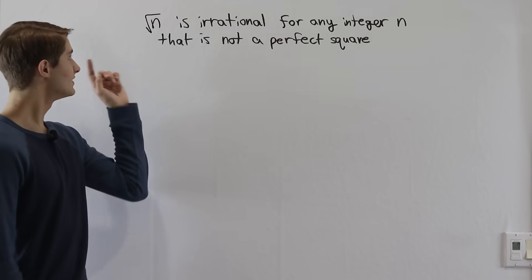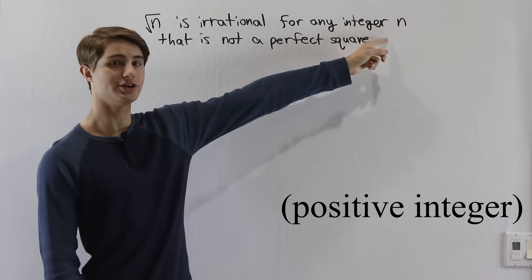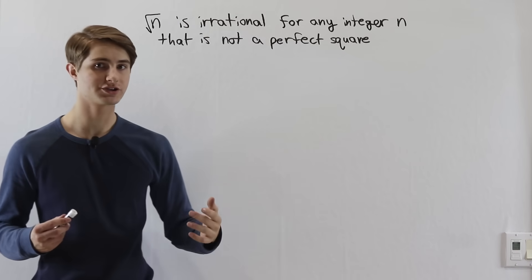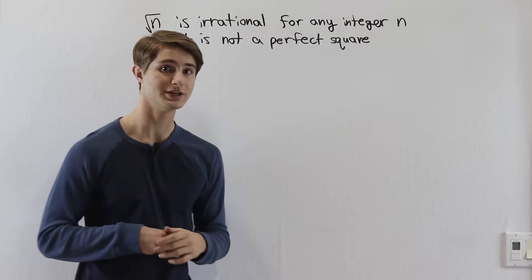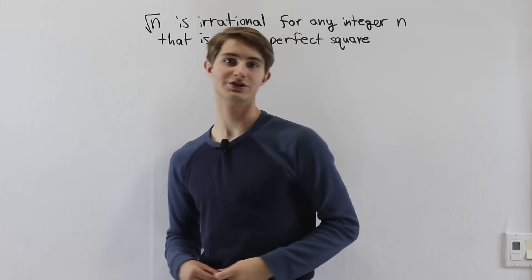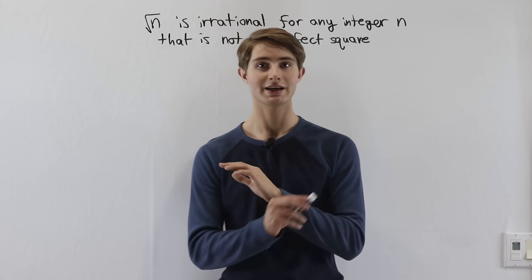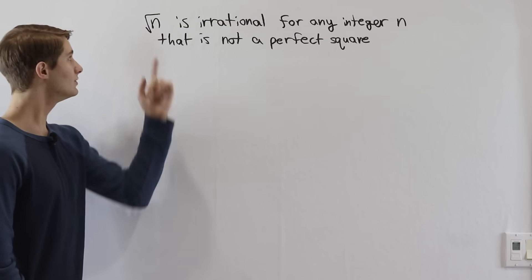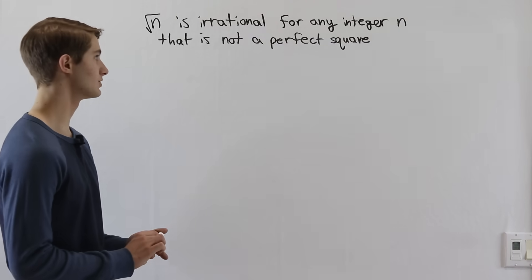We are going to prove that the square root of n is irrational for any integer n that is not a perfect square. We aren't just going to show that the square root of 2 is irrational or the square root of 3 is irrational. We're going to show that the square root of 12 is irrational and the square root of 44 is irrational — anything that isn't a perfect square, we will show that its square root must be irrational.